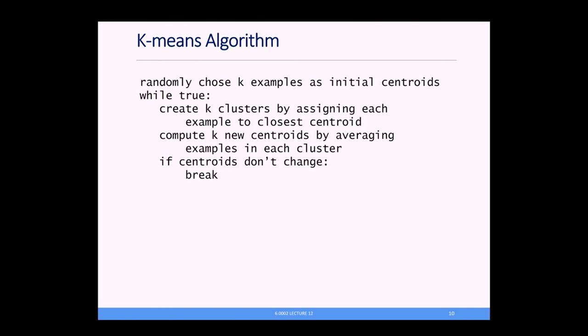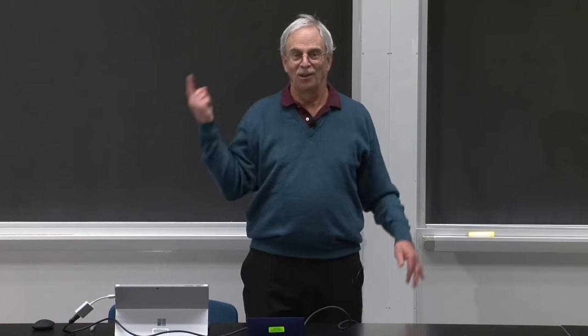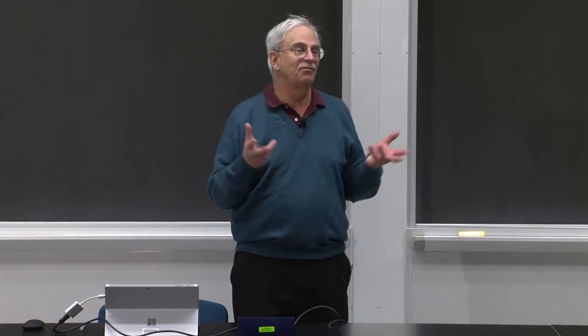You randomly choose k examples as your initial centroids. Doesn't matter which of the examples you choose. Then you create k clusters by assigning each example to the closest centroid. Compute k new centroids by averaging the examples in each cluster. So in the first iteration, the centroids are all examples that you started with. But after that, they're probably not examples, because you're now taking the average of two examples, which may not correspond to any example you have. Actually, the average of n examples. And then you just keep doing this until the centroids don't move. Once you go through one iteration where they don't move, there's no point in recomputing them again and again and again. So it is converged.